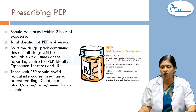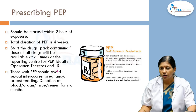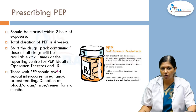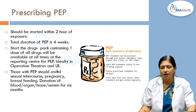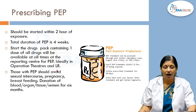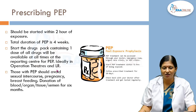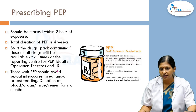Post-exposure prophylaxis should be started within 2 hours of exposure. The total duration is 4 weeks, and a drug pack containing one dose of all drugs should be available at all times — in all operating theaters and labor rooms. Those on PEP should avoid sexual intercourse, pregnancy, breastfeeding, and donation of blood, organs, tissue, or semen for 6 months.